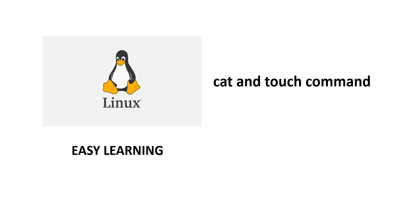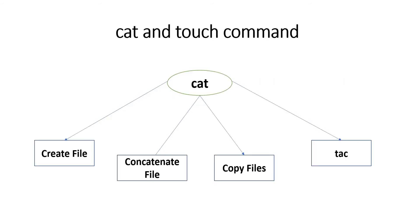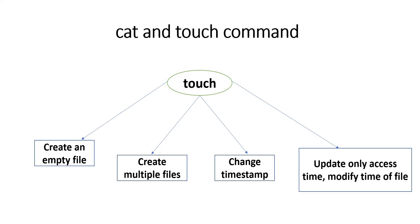In this video we will cover the cat and touch commands. First we will cover what the cat command is, then what the touch command is, and then we will execute these commands on our Amazon Linux machine. The cat command is basically used to create a file, concatenate contents to an existing file, copy the content of one file into another file, and also we have tac.